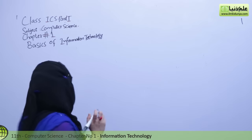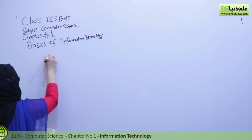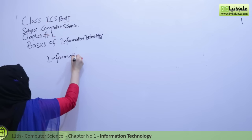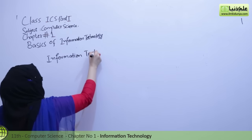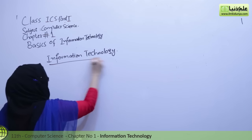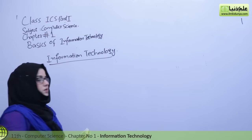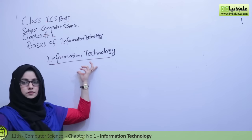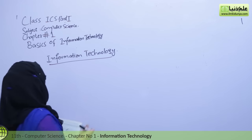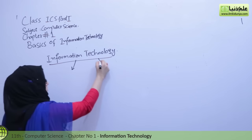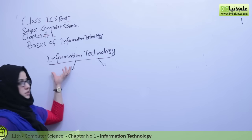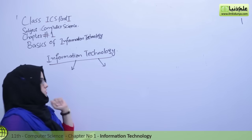We will define information technology first. The word 'information technology' basically contains two words: one is 'information' and the other is 'technology.' So what is information and what is technology?